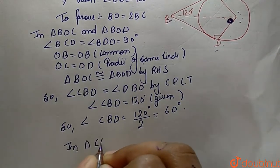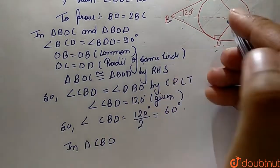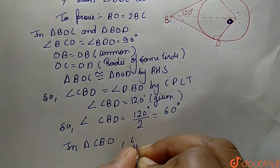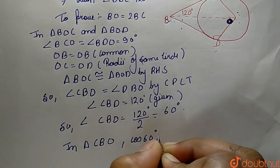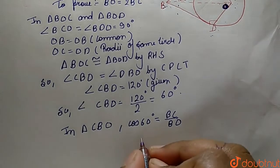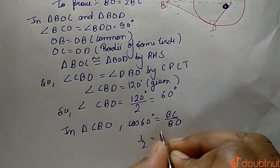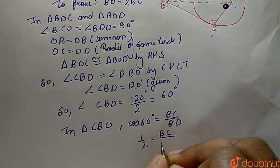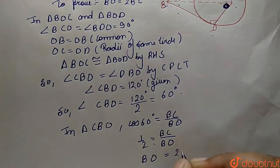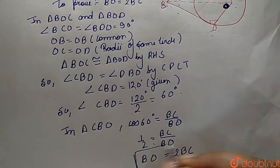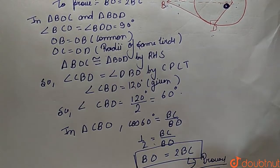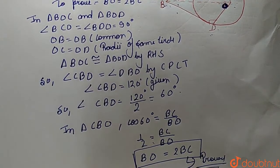In triangle CBO, cos(60°) equals BC upon BO. The value of cos 60° is 1/2, so 1/2 equals BC/BO. Cross-multiplying, BO equals 2 times BC. This is what we had to prove.